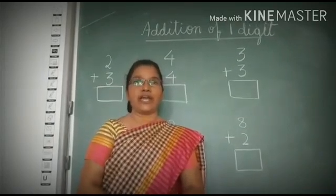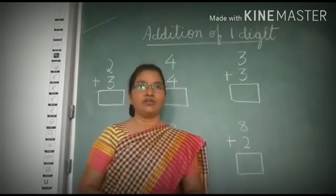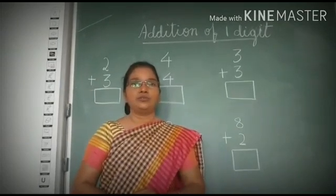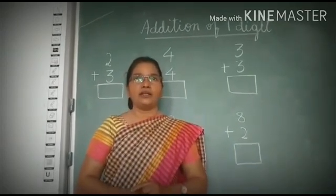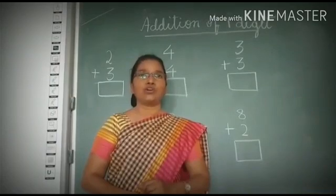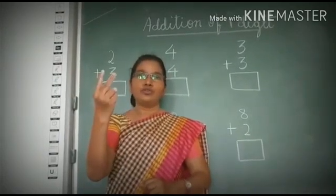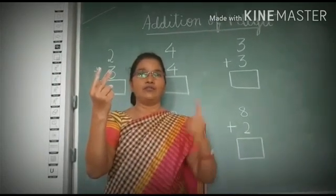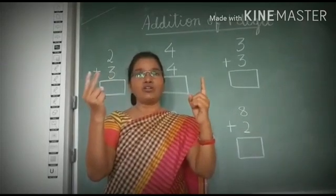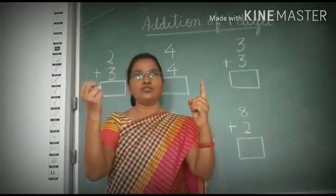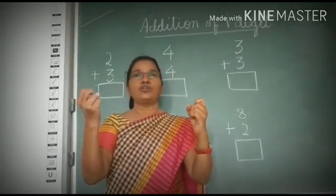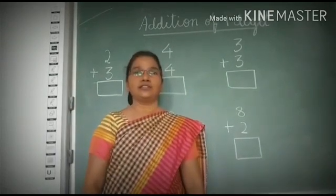First we learn Addition with the finger. Now tell me 2 plus 1. How will you do? Take out your finger first. 2 and 1 finger. Now count all together. 1, 2, 3. So 2 plus 1 is 3.